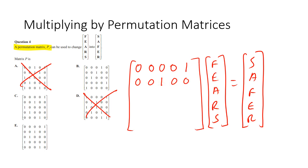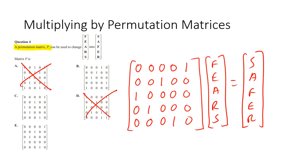Following the same logic: we want F next, which is the first letter of FEARS, so the third row is 1, 0, 0, 0, 0. Then we want E, the second letter, so row four is 0, 1, 0, 0, 0. Finally we want R, the fourth letter, so row five is 0, 0, 0, 1, 0. B is eliminated because its first row is wrong, and comparing C and E, C is the correct answer. That's how you turn FEARS into SAFER.